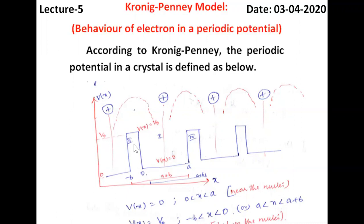Region 1 and region 2 are periodically extended along the x-axis — for example, region 2 is similar to region 3 and so on. The periodicity of this potential is a plus b, meaning after each (a+b) distance the potential repeats.